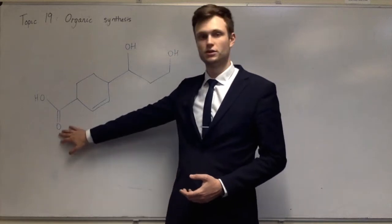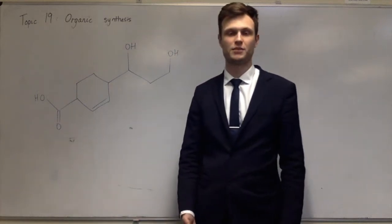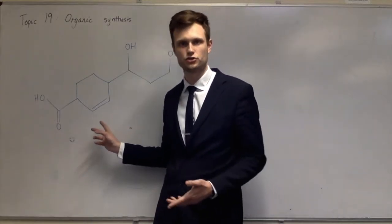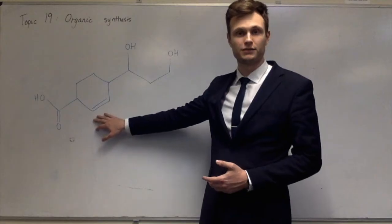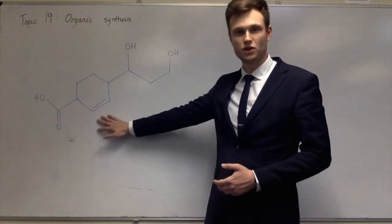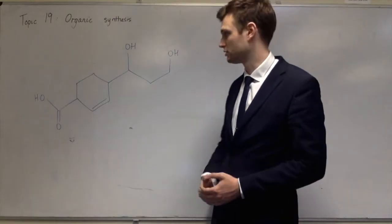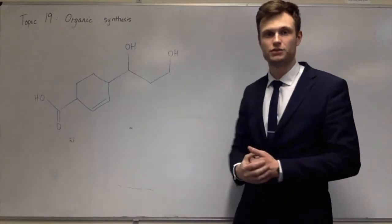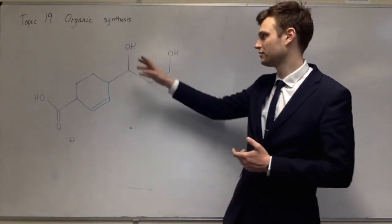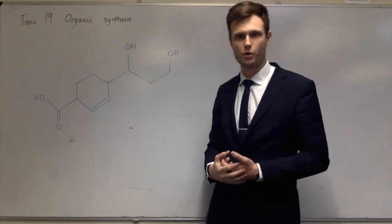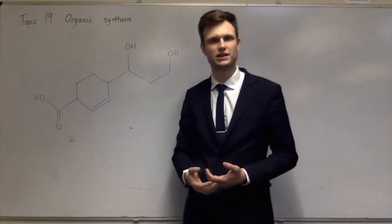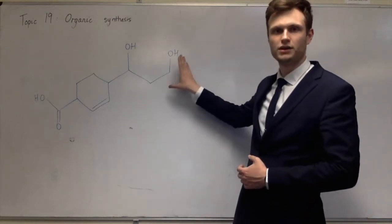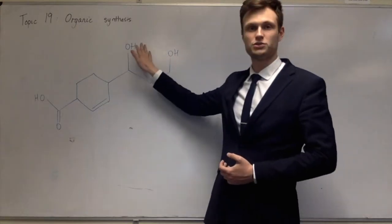All you need to know is what each functional group does. Carboxylic acids react with bases to make salts. Alkenes undergo addition reactions — you can add hydrogen to make an alkane, a hydrogen halide to make a haloalkane, a halogen to make a dihaloalkane, or polymerise them. Alcohols can be converted to haloalkanes — for example, adding hydrochloric acid replaces OH groups via nucleophilic substitution. You can also oxidise them: a primary alcohol becomes a carboxylic acid, and a secondary alcohol becomes a ketone.